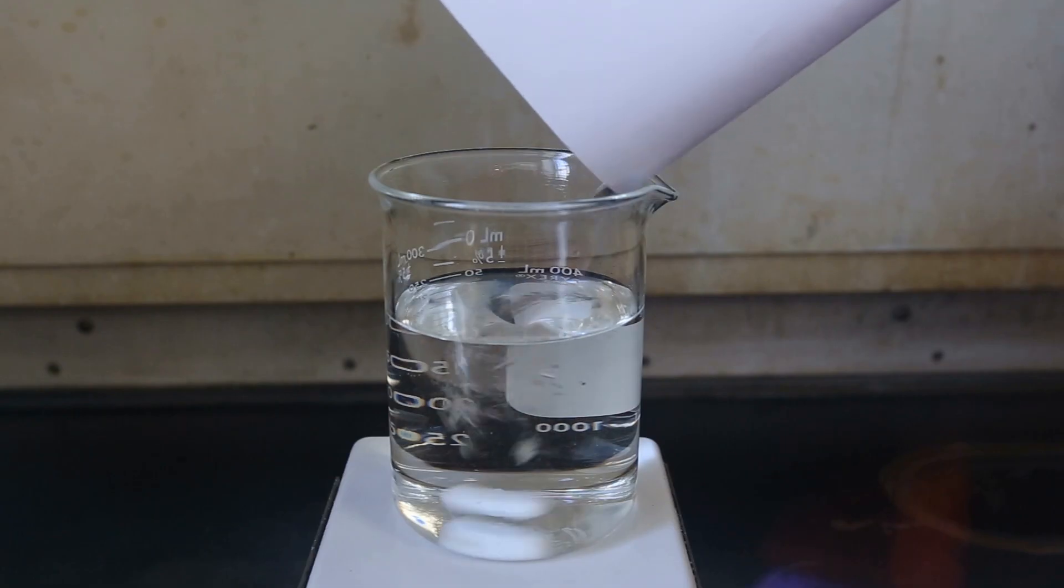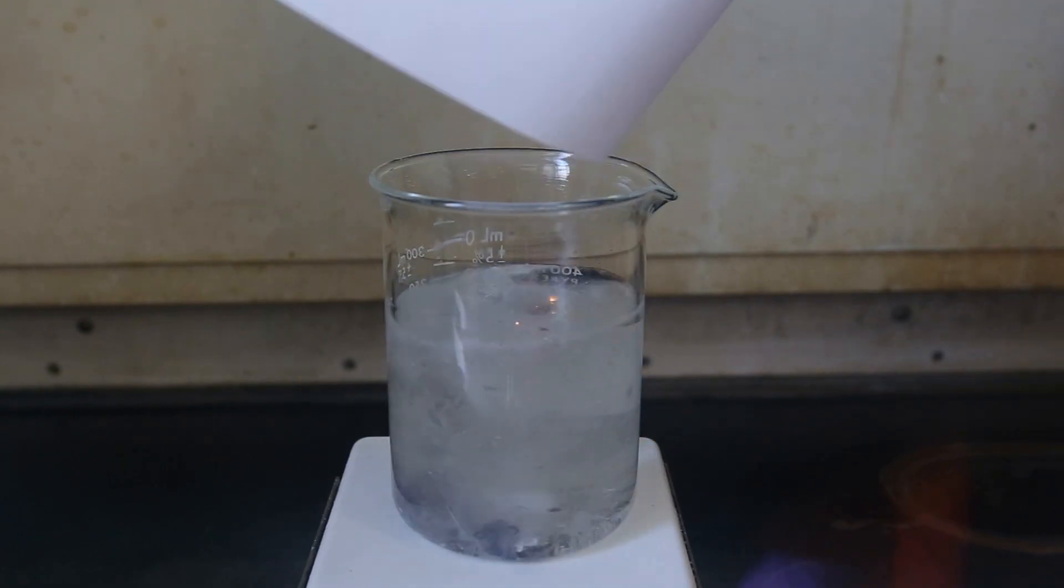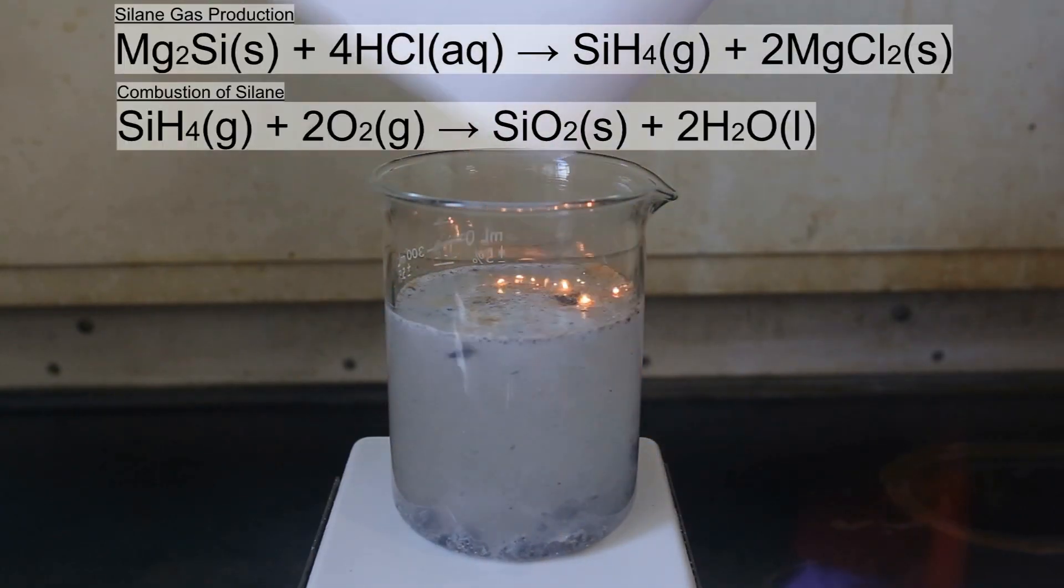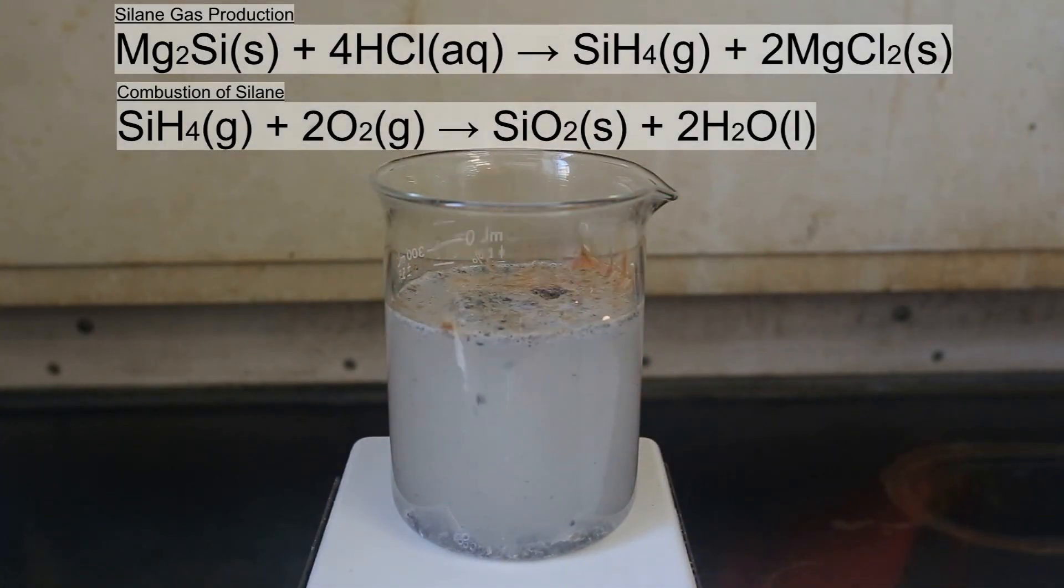Next, I poured all of the magnesium silicide into an acid solution. The reaction taking place is shown above. The magnesium silicide reacts with the hydrochloric acid to produce magnesium chloride and silane gas.